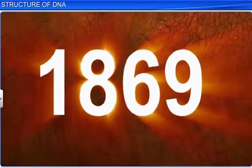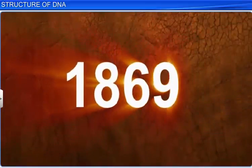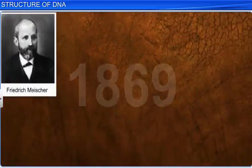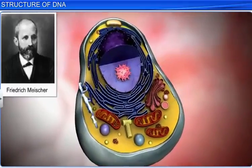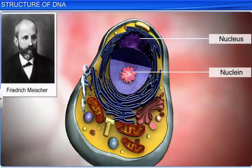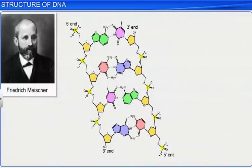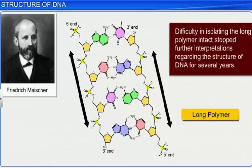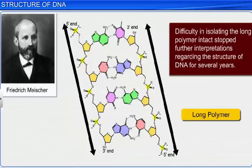It was in the year 1869 that Friedrich Miescher first identified DNA as an acidic material present in the nucleus and called it the nuclein. However, technical limitations made it very difficult to isolate such a long polymer intact, and therefore no further interpretations regarding the structure of DNA were made for several years.